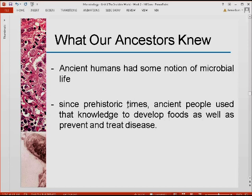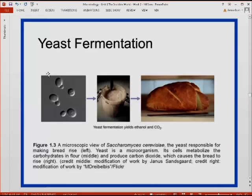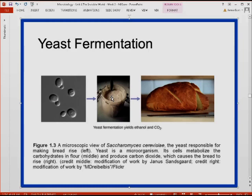Since prehistoric times, ancient people used that knowledge to develop foods as well as to prevent and treat diseases. Here's a picture of yeast cells which are used for production of bread. The production of bread has been done for several thousands of years. You mix yeast with water, flour, eggs, sugar, and other components, put it in the oven, and you produce soft bread. The yeast cells metabolize the sugars in the batch and produce carbon dioxide, which causes the bread to rise, thus producing soft bread.